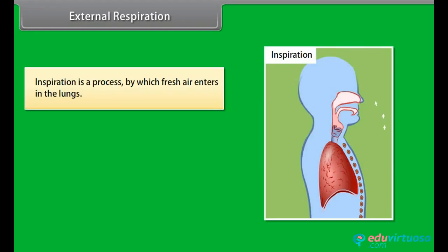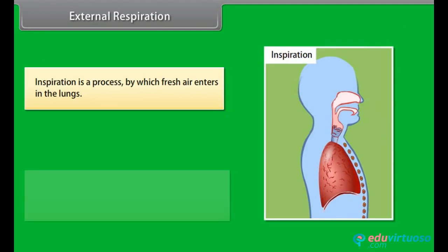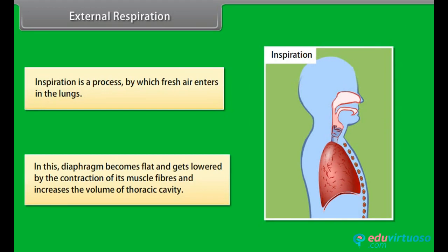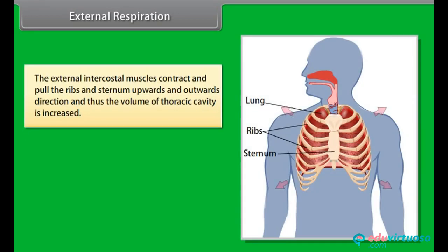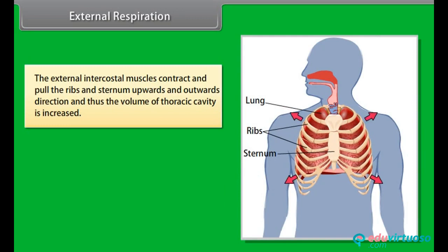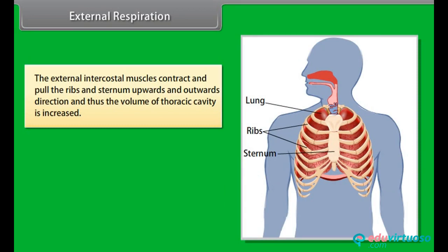Inspiration is the process by which fresh air enters the lungs. The diaphragm becomes flat and gets lowered by the contraction of its muscle fibers, increasing the volume of the thoracic cavity. The external intercostal muscles contract and pull the ribs and sternum upwards and outwards, thus further increasing the volume of the thoracic cavity.